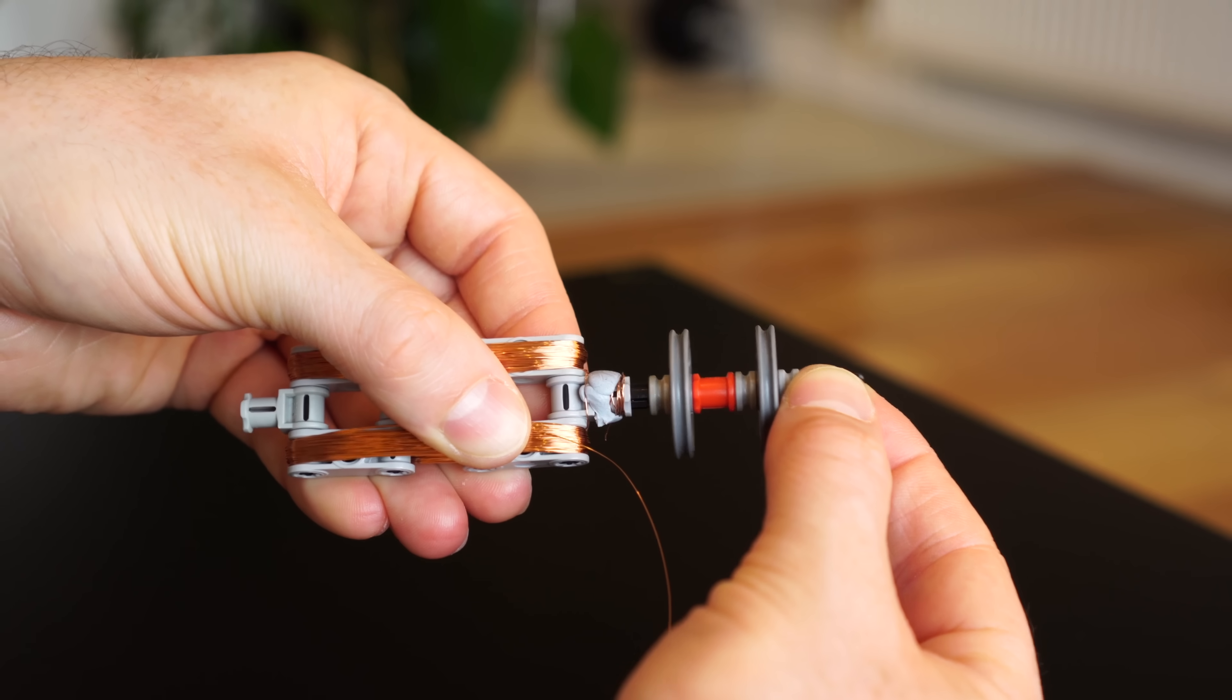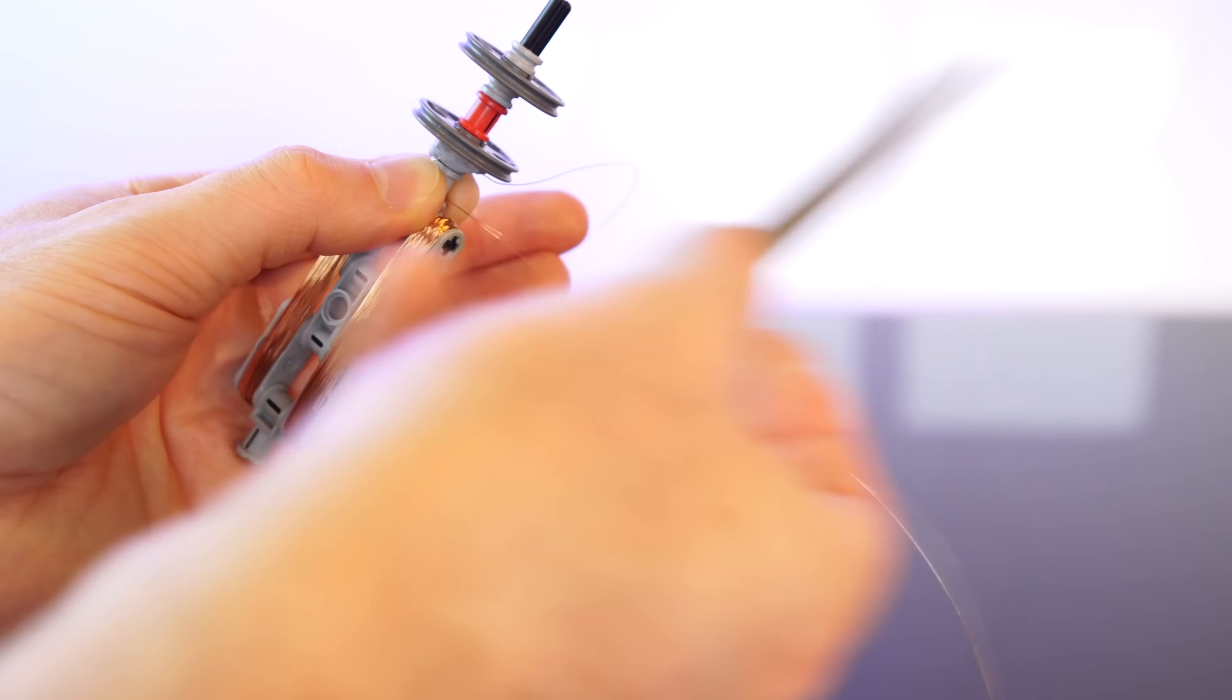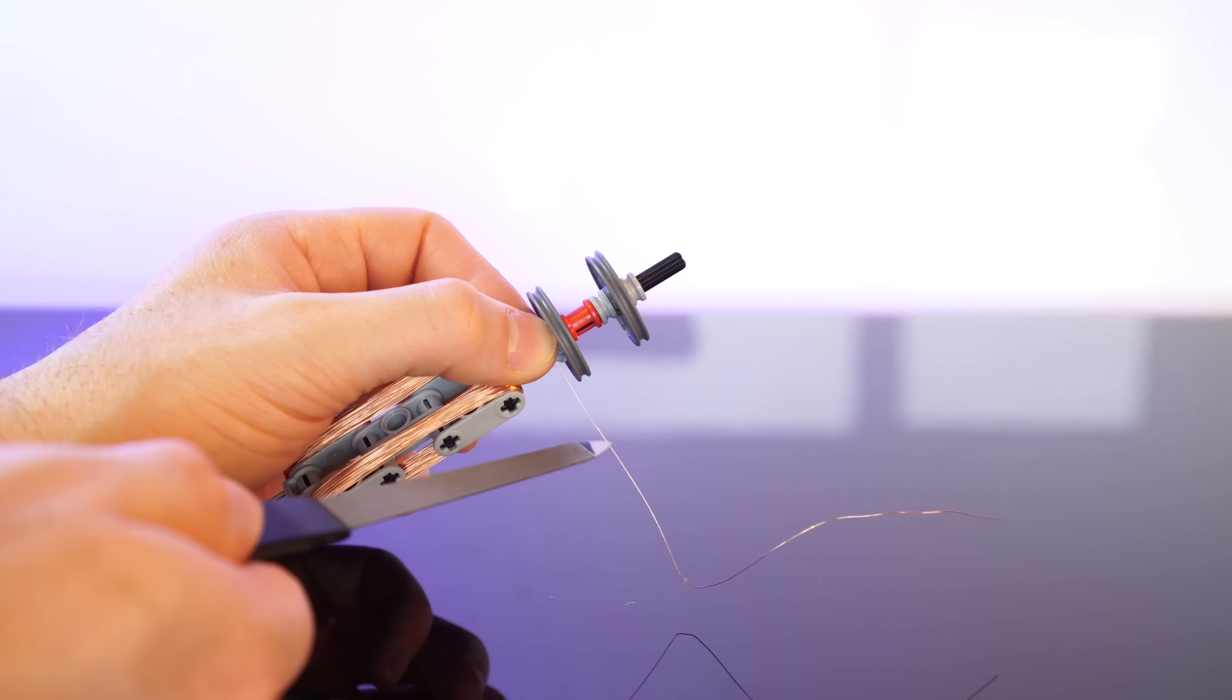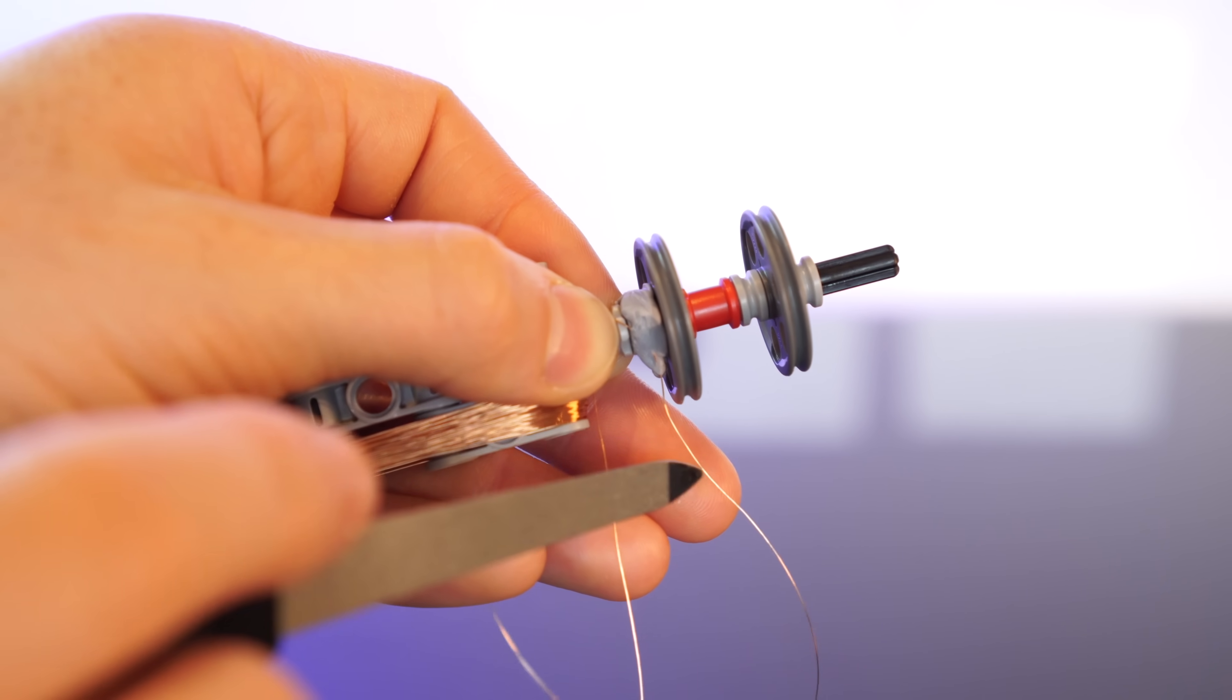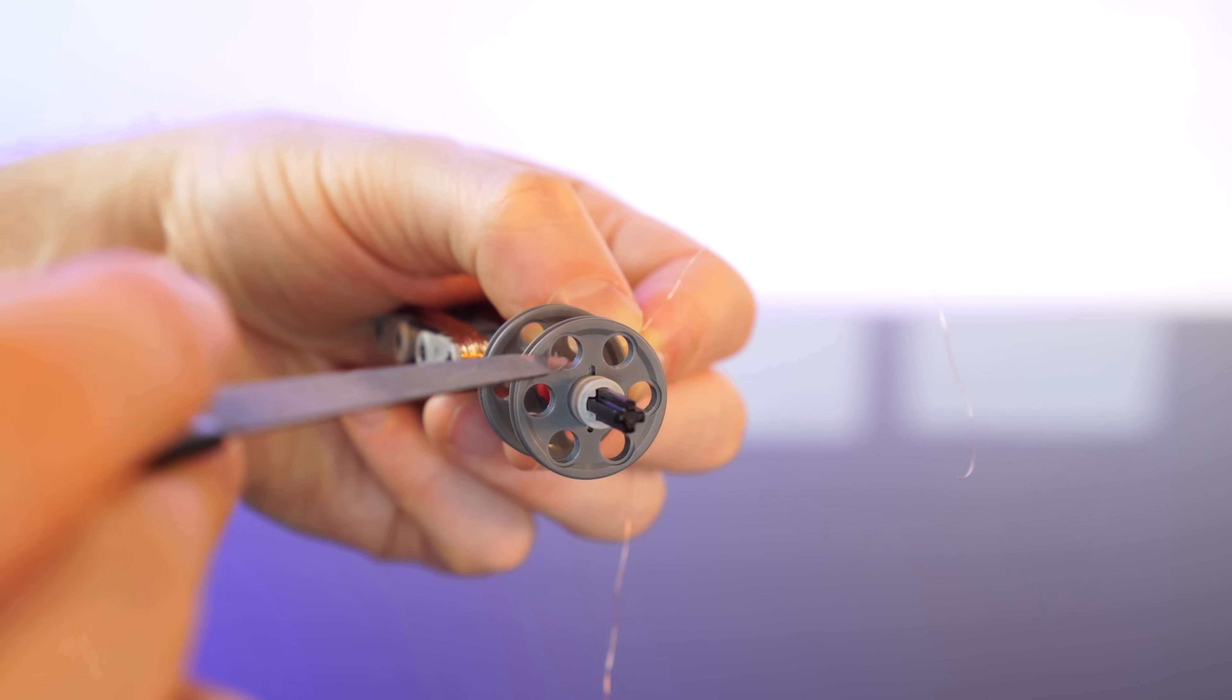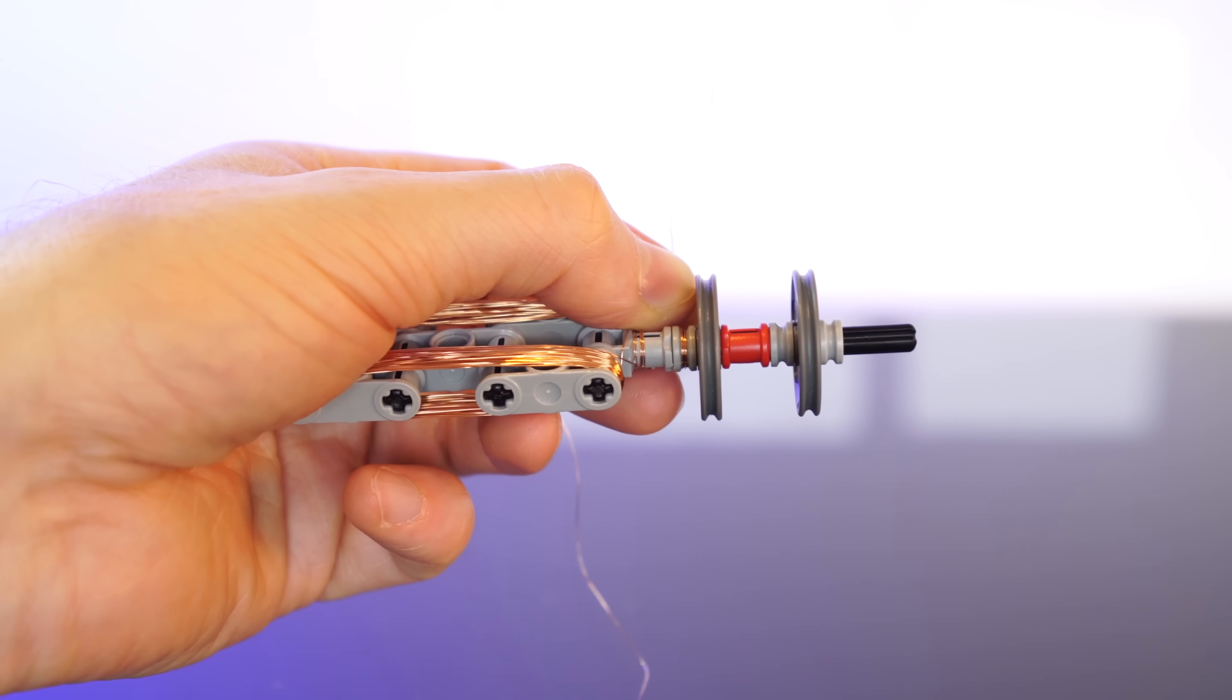And now it's time for a commutator, which will serve as our timer for the rotations. First, I'm going to strip the enamel coating from the wire ends to expose them. So this is just one long wire from start to finish. And these holes in the Lego wheels will allow us to pass the wire through, slightly offset from the orientation of the rotor coils.